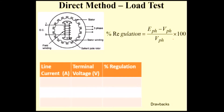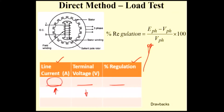This is the tabular column for the direct load method. First you have to set the no-load arrangement; load should be in no-load condition. Then you have to take the terminal voltage, then the line current. Normally during no load, the line current will be very less to meet the losses. Then you can calculate the regulation using this formula. Then gradually increase the load — the current increases and the terminal voltage normally decreases. Like that, gradually increase the load up to rated current, take the terminal voltage, and calculate the percentage regulation.